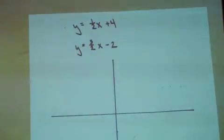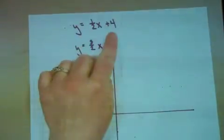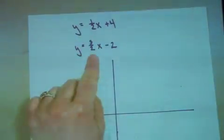Let's find the point of intersection for the lines y equals 1 half x plus 4 and y equals 3 half x minus 2.